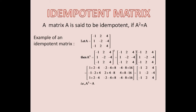Now you have to multiply: first row, first column; first row, second column; first row, third column. You have to multiply to get the various elements. First row, first column: minus 1 into minus 1 gives plus 1, plus 2 into 1 gives plus 2, 4 into minus 1 gives minus 4. First row, second column: minus 1 into 2 gives minus 2, 2 into minus 2 gives minus 4, 4 into 2 gives 8.